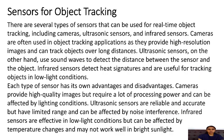Sensors for object tracking. There are several types of sensors that can be used for real-time object tracking, including cameras, ultrasonic sensors, and infrared sensors. Cameras are often used as they provide high-resolution images and can track objects over long distances. Ultrasonic sensors use sound waves to detect the distance between the sensor and the object. Infrared sensors detect heat signatures and are useful for tracking objects in low-light conditions. Each type of sensor has its own advantages and disadvantages.